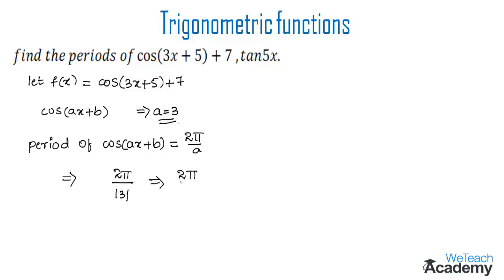So we get 2π/3 as the period of the given function cos(3x+5)+7.